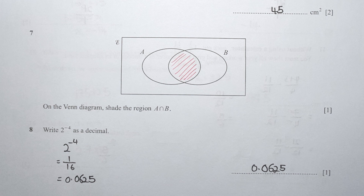For question 7, they are looking for A intersect B, so the shaded region will be the one shaded red in the diagram.